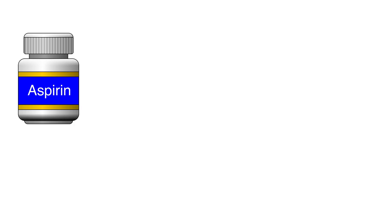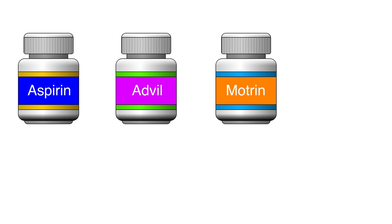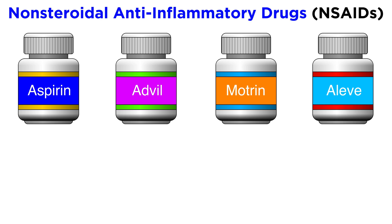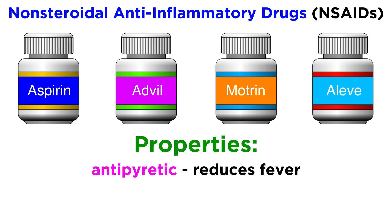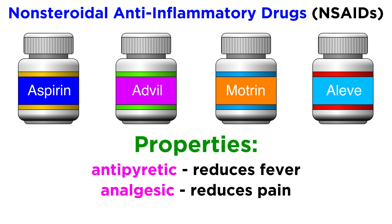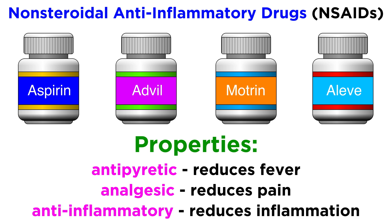Aspirin, along with similar drugs such as Advil, Motrin, and Aleve, all belong to a class of drugs called NSAIDs, which stands for nonsteroidal anti-inflammatory drugs. They are widely used because of their three important properties: they are antipyretic, meaning they reduce fever; analgesic, lowering the amount of pain we feel; and anti-inflammatory, reducing inflammation, an important part of the immune response.